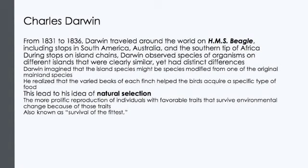Darwin was particularly intrigued by the geographic distribution of organisms on the Galapagos Islands. The Galapagos Islands are relatively young volcanic islands about 900 kilometers, that's about 540 miles, off the Pacific coast of South America. Most of the animals that inhabit these remote islands are found nowhere else in the world, but they resemble species living on the South American mainland.